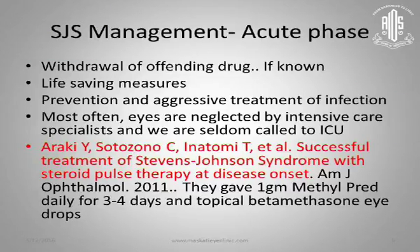Management should be divided into the acute and chronic phases. Many times these patients go first to the ICU because their life is threatened. The doctors will withdraw the offending drug if known and institute life-saving measures; only then will they call the ophthalmologist — often too late, with the cornea and conjunctiva already melting. If called in early, you need aggressive management of infection both systemically and topically, as the resistance is so low that chances of ocular infection are very high.